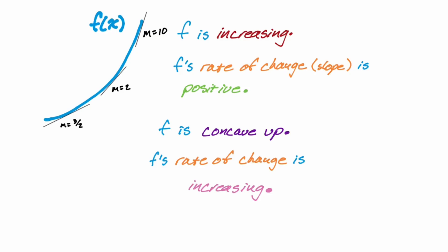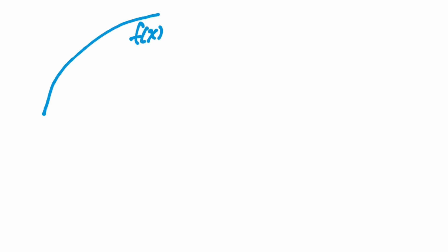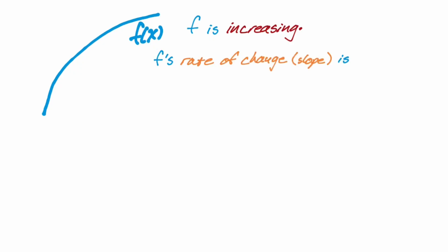We're going to do that again. We have this new graph. First thing: increasing or decreasing? You can see the Y values are getting bigger as you move from left to right, so F is definitely increasing. Now we want to talk about the rate of change. F is increasing, which means the rate of change — the slope — is positive. Okay, so far so good.